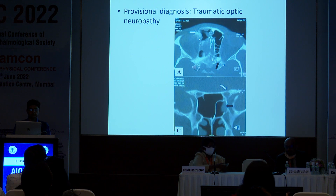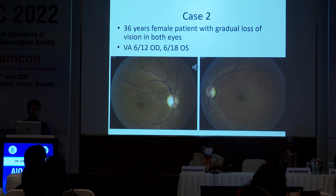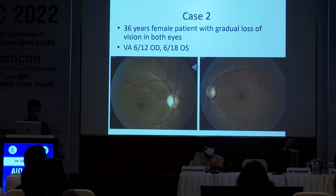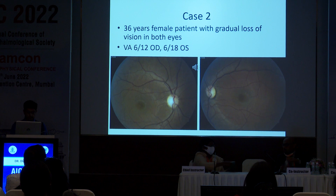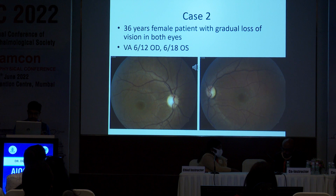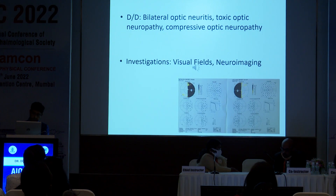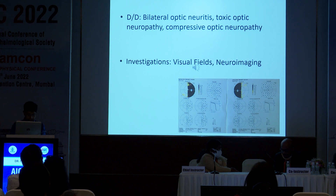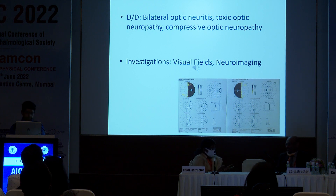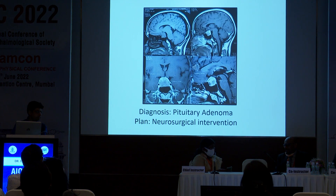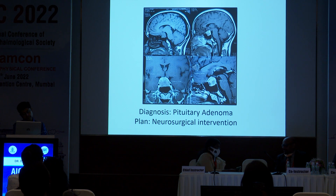This is a 36-year-old female with gradual loss of vision in both eyes. You can see that there is temporal pallor appearing in both the optic discs. The differential diagnosis could be either a bilateral retrobulbar neuritis, a toxic optic neuropathy, or some kind of compressive optic neuropathy. On investigation, the visual fields show a bitemporal hemianopia — that immediately becomes an indication for imaging. Imaging shows a large pituitary macroadenoma compressing on the chiasm, and the plan is neurosurgical intervention.